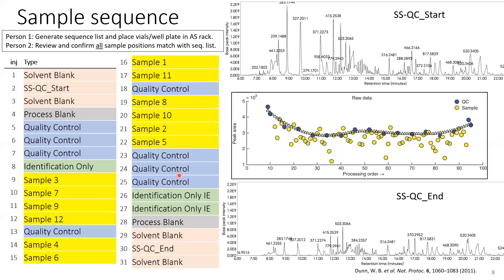We finish up with more identification-only injections of the pool QCs, maybe a process blank and a solvent blank to check for carryover, and then a system suitability test again. This is an example of a system suitability test from the beginning of the analytical sequence — a very nice chromatogram with a lot of peaks. And this is what happened at the end. So we had to clean the instruments and change the sample prep to get the same signal again, because when you compare the two chromatograms, they are completely different. We had to change parameters and restart the sequence.